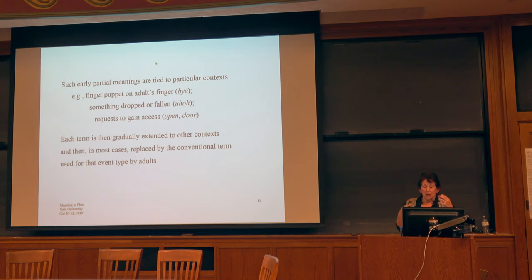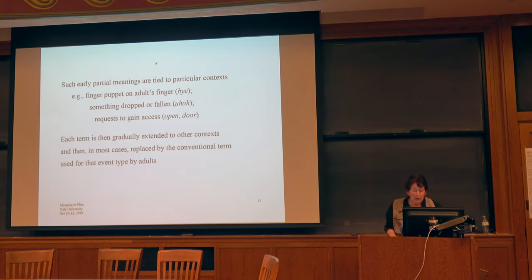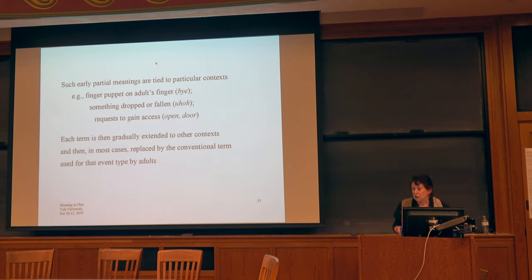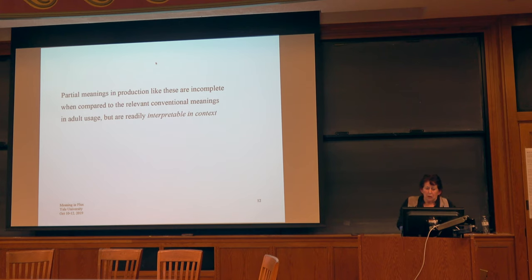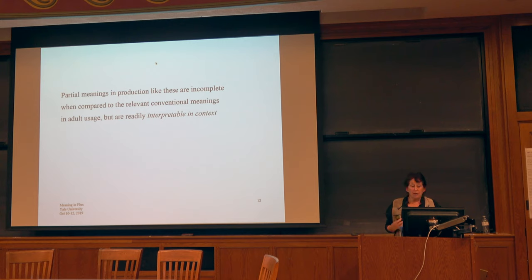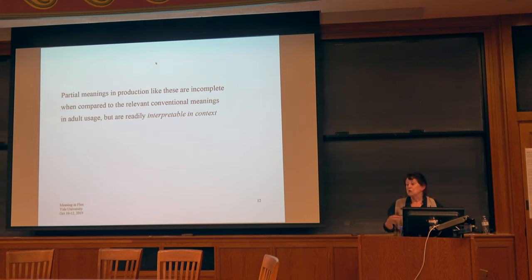So what we've got is early partial meanings often tied to very specific contexts. In general, each term gradually got extended to other contexts, and then in most cases replaced by the conventional term that adults would use for that event type — which was the term the adults around were actually using. Partial meanings like these in production are incomplete when compared to the relevant conventional meanings, but notice they're all extremely readily interpreted in context, because the adults around the child can use contextual cues to interpret what the child clearly intended.